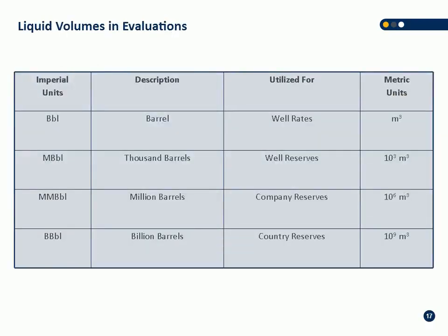In oil and gas reports you'll see barrels, thousands of barrels, millions of barrels, and billions of barrels. There's an issue in industry: accountants use M to mean millions of dollars, whereas in engineering M means thousands. So an M in an engineering report means times a thousand, and in an accounting report it usually stands for millions. The metric units are meters cubed, E3M3s (10³ m³), and so on.